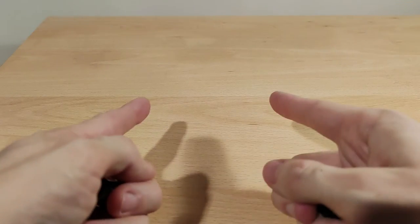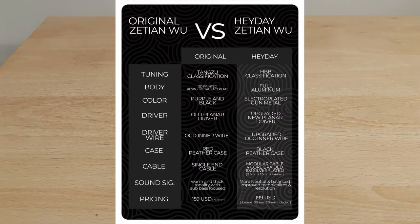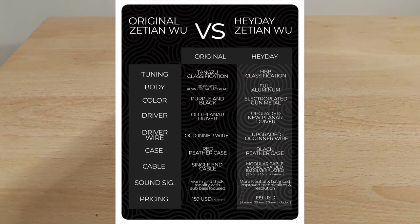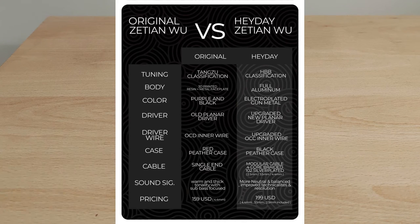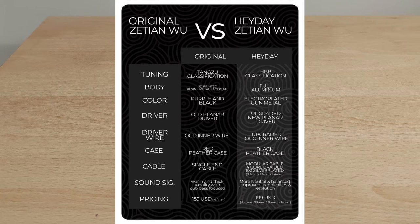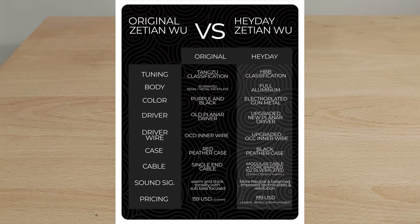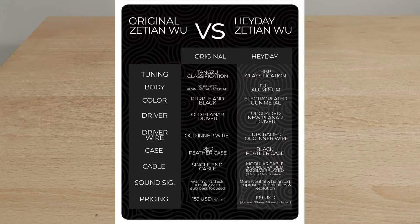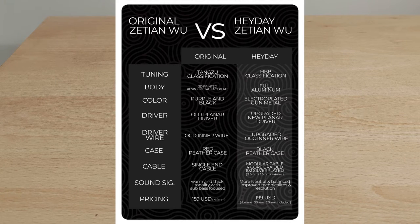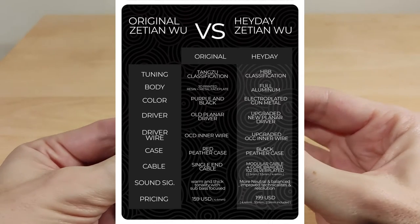I'll pull it up now so you can see what it looks like. It's a comparison between the original. As you can see, the tuning, the body, the color, the driver, there's a few differences, some that you see, some that you don't see. Now it's a full aluminum body and all that kind of good stuff. It's a $40 difference depending where you buy it. That's not too bad. You get multiple differences plus a new driver.